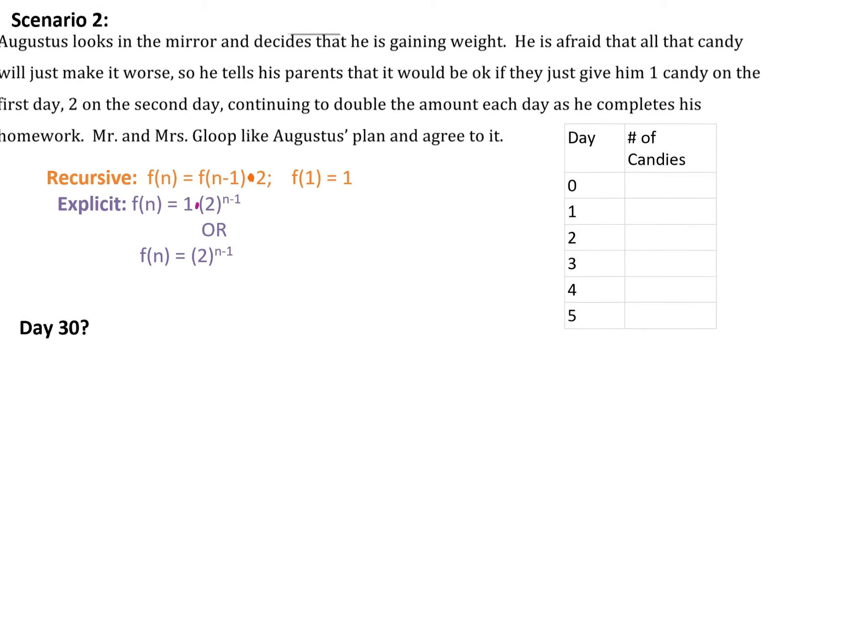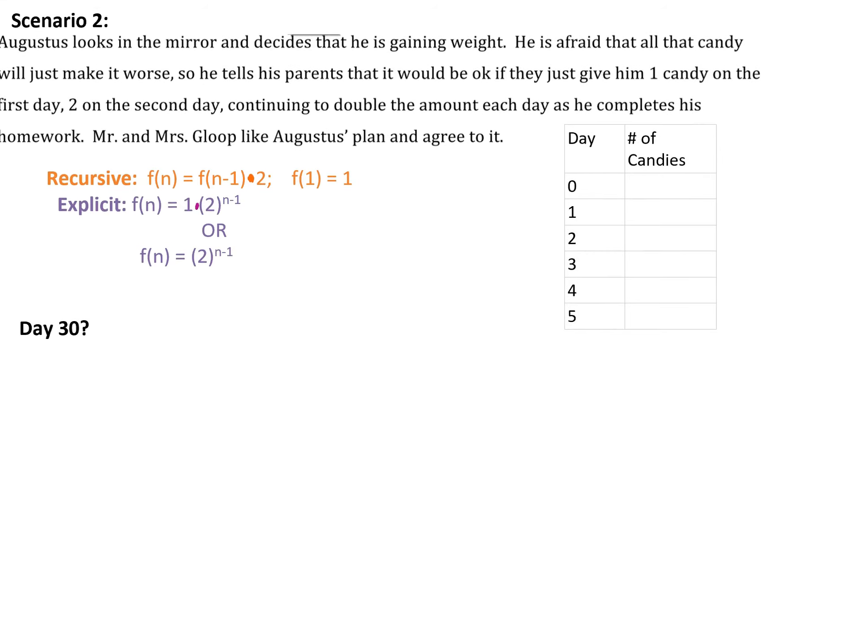And so then we skip down to scenario two. In scenario two, Augustus looks in the mirror and decides he's gaining weight on the scenario one plan, so he comes up with a plan that he thinks is better. On day one his parents can just give him one candy, and then two, and then four. It says they're gonna double the amount, so that would actually be eight and then sixteen on day five. So we can write the recursive rule: f(n) = f(n-1) × 2, f(1) = 1. So again we can get this explicit rule shown here: 1 × 2^(n-1).